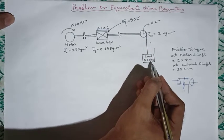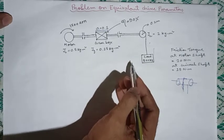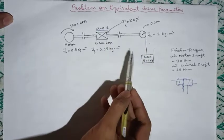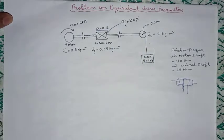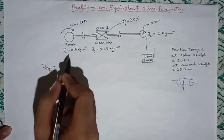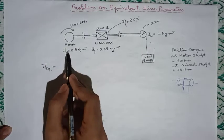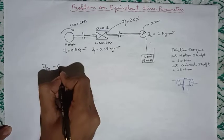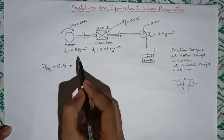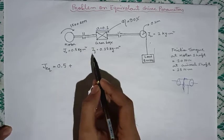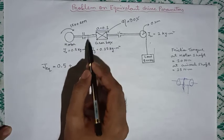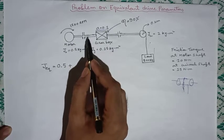The load has an up and down motion, and its weight is 500 kilogram. Now let us first find the equivalent moment of inertia of the system referred to the motor shaft. J equivalent will be, first we will write the moment of inertia of the motor which will be 0.5. Now I have told that we have to write all the moment of inertia of all the components which are directly connected to the motor shaft.